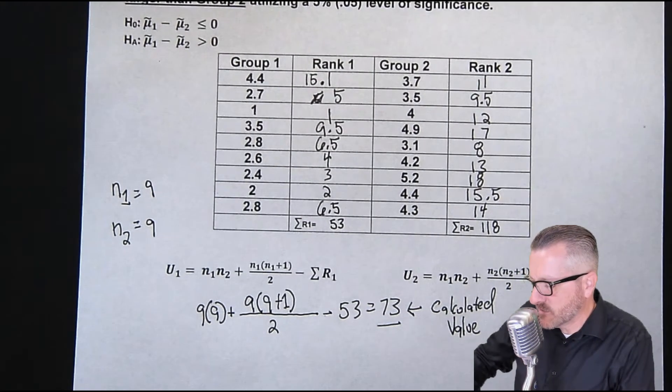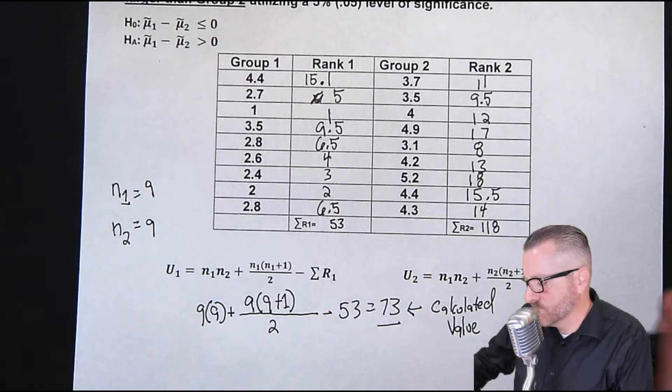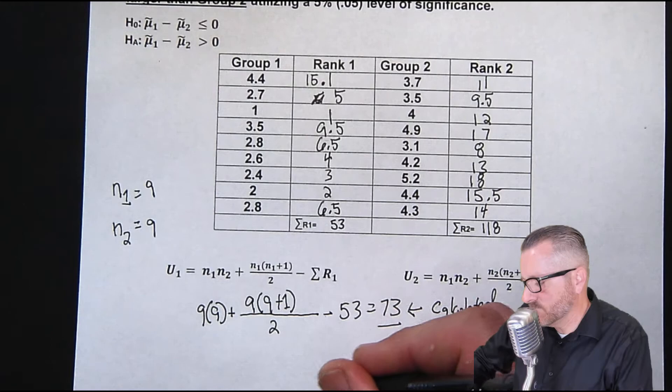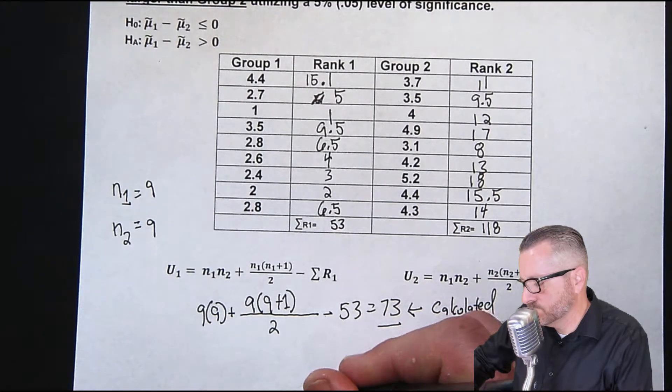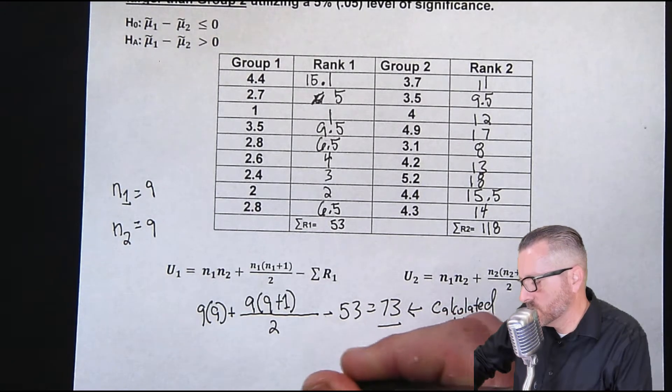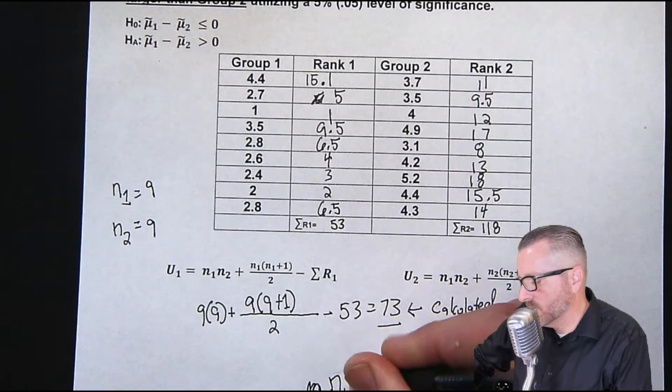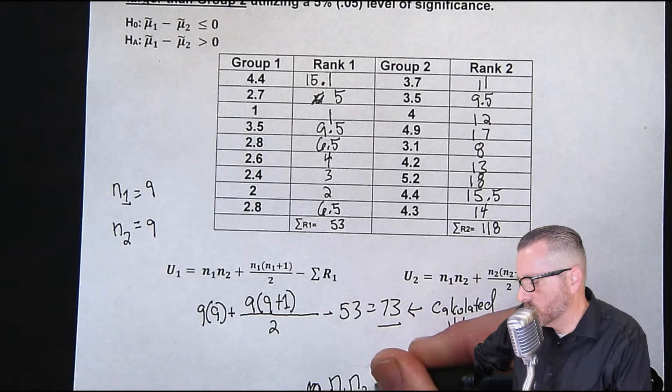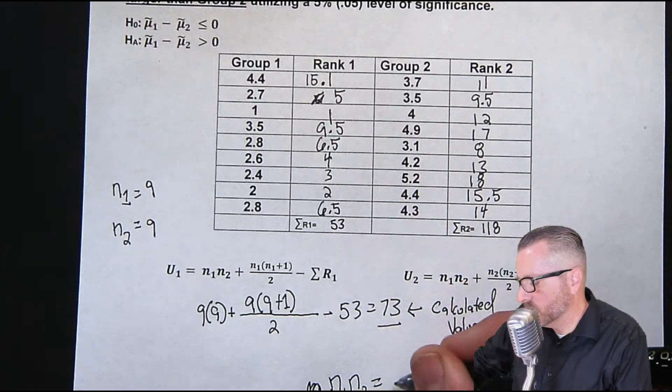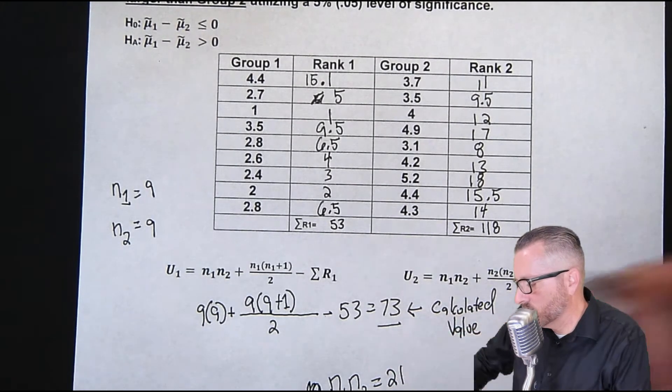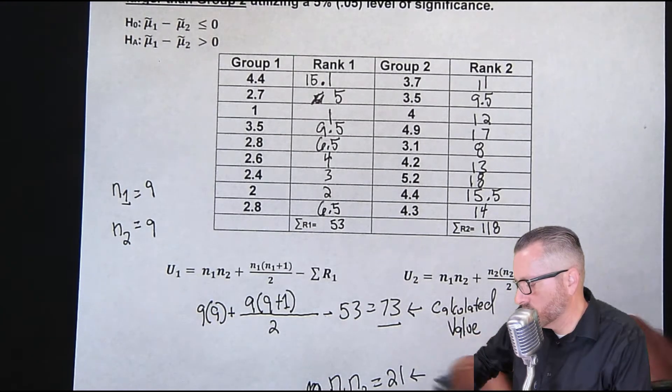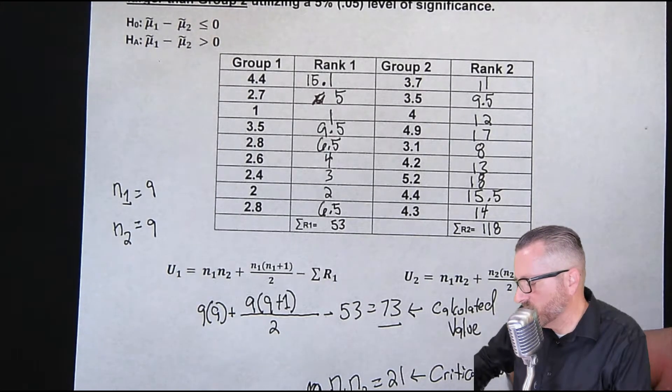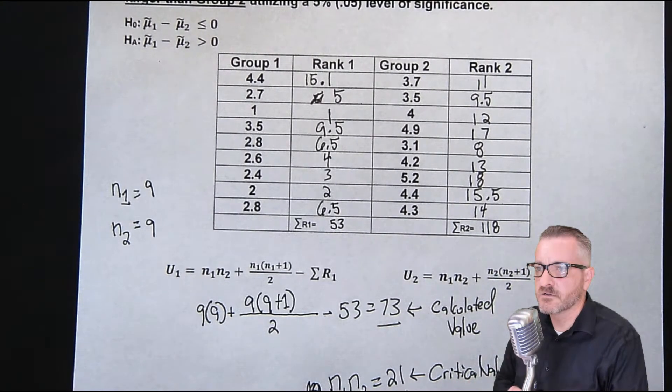So we can write this a couple ways. I'll write it like, n1, n2, is 21. Critical value. So that's our critical value. I'll scoot up. I'll back up just a little bit. So that's our critical.